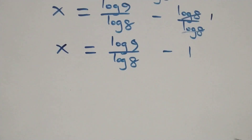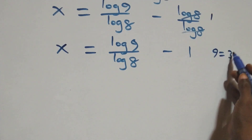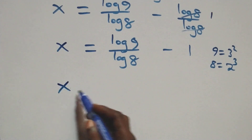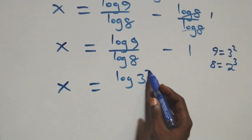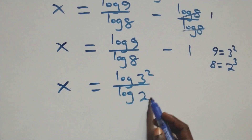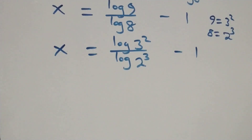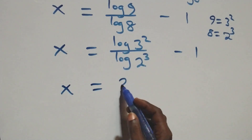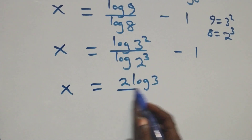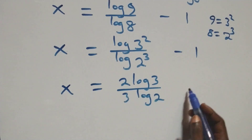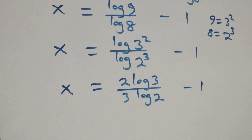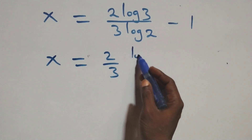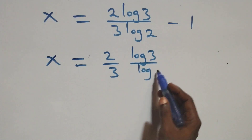We can rewrite 9 as 3 times 3, which is 3 squared, and 8 as 2 times 2 times 2, which is 2 cubed. Applying the power rule of logarithms, the 2 and 3 come down as coefficients, giving us x equals 2 log 3 over 3 log 2 minus 1. This can also be rewritten as x equals 2 over 3 times log 3 over log 2 minus 1.